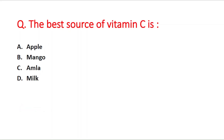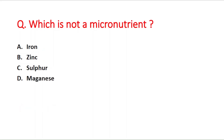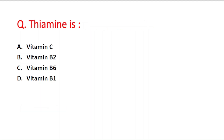Next question: the best source of vitamin C is — option A is apple, B is mango, C is amla, and D is milk. The right answer is option C — amla. Next question: which is not a micronutrient? Option A iron, B zinc, C sulfur, D manganese. The right answer is option C — sulfur.